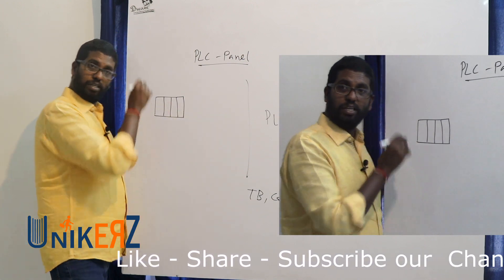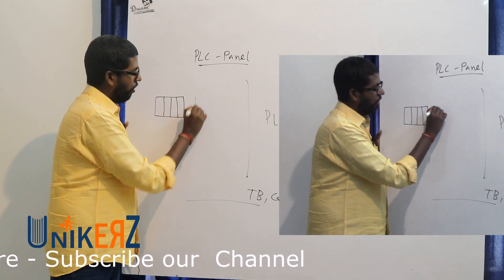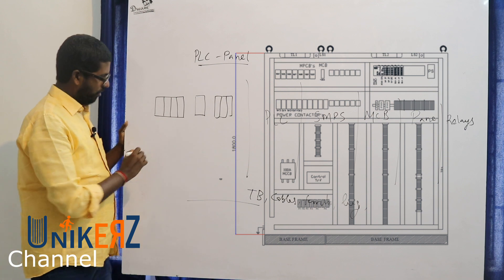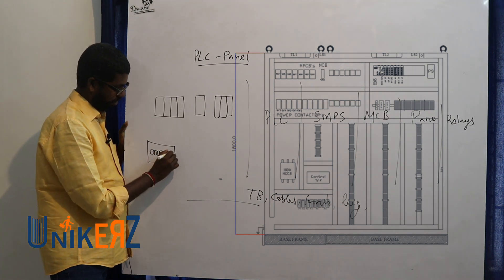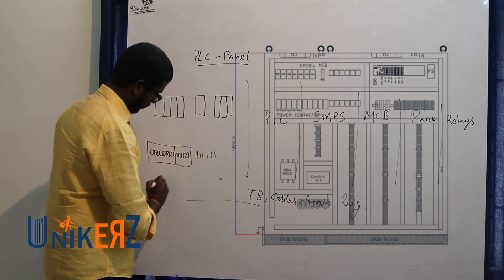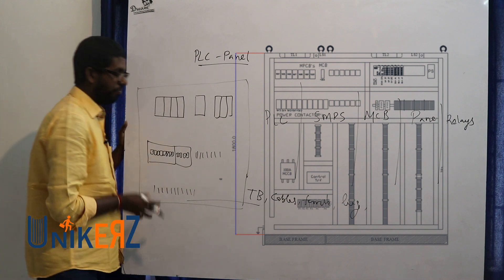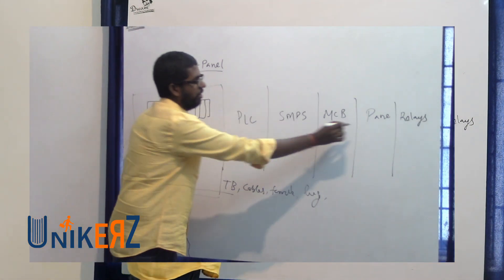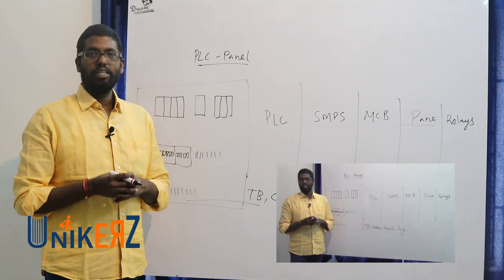Inside the panel we need to lay out the TIN rail, mounting TIN rail, and cable duct. We also draw SMBs, breakers, relays, and terminals with their dimensions. Based on the complete layout dimension, we can choose a nearby standard panel size such as 500×500, 600×500, 800×600, or 1200×800.